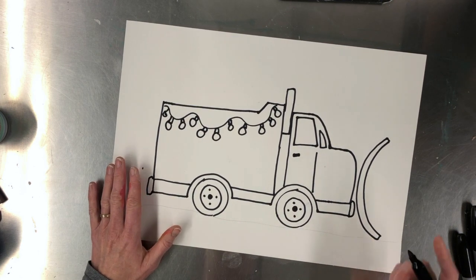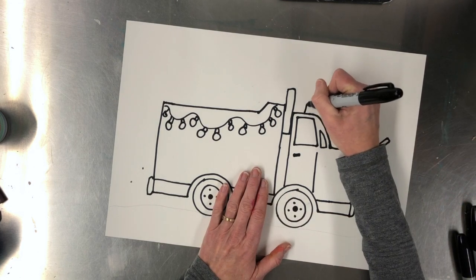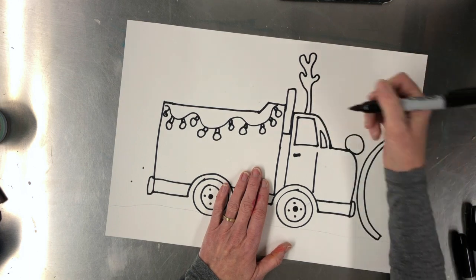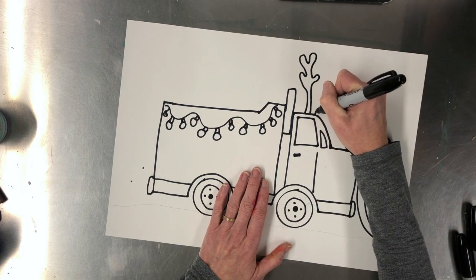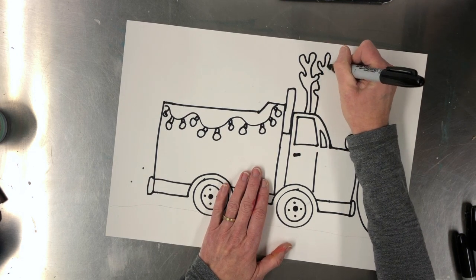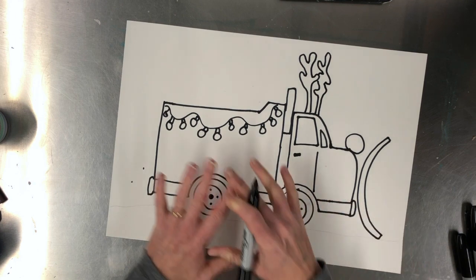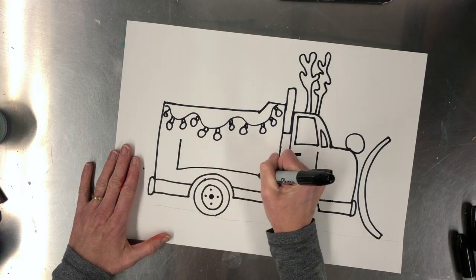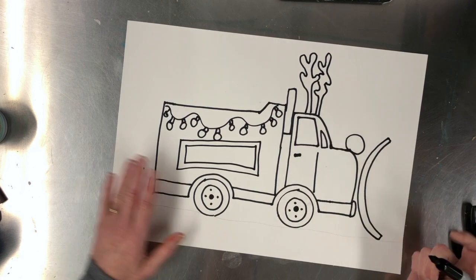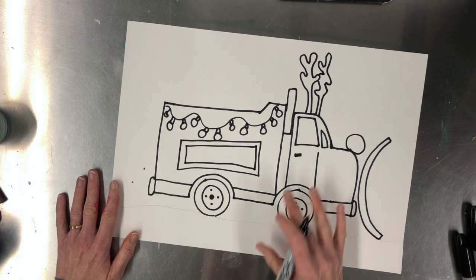You can add maybe a Rudolph's nose if you want and some antlers. See, it is a Rudolph snow truck. You could add anything you want. If you want to add a sign, you can add a sign. You could add a wreath. You could add whatever you want. Maybe there's a snowman here. Anything you want is fine. It's your picture.